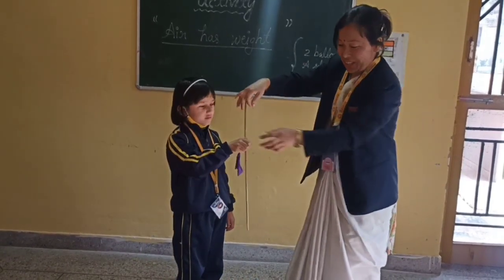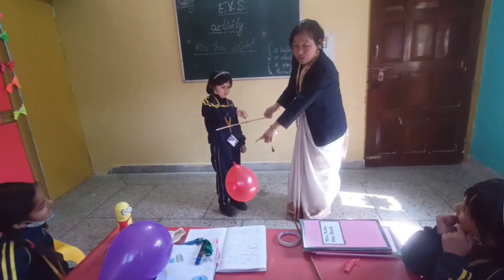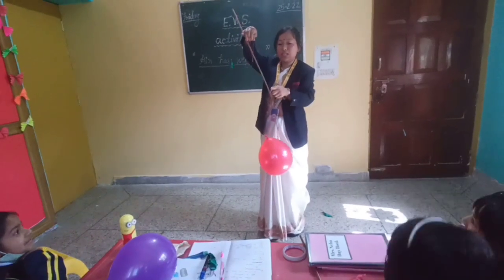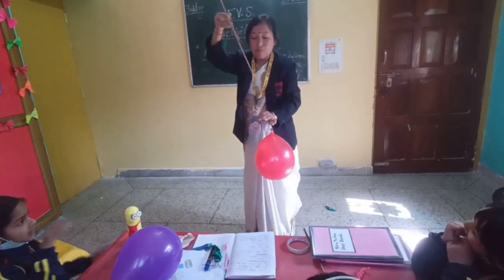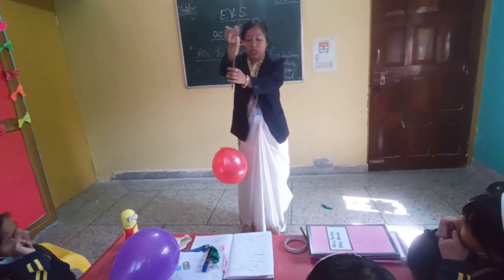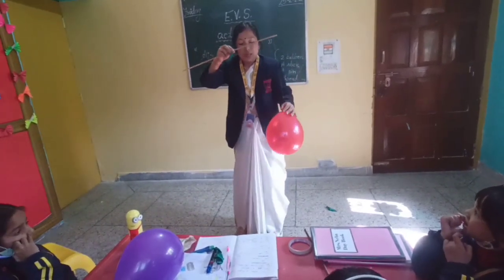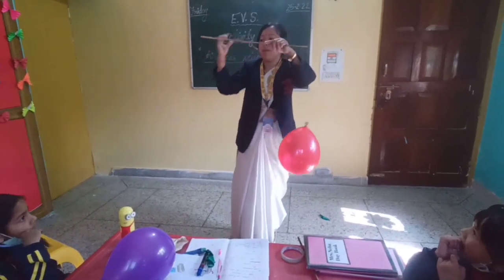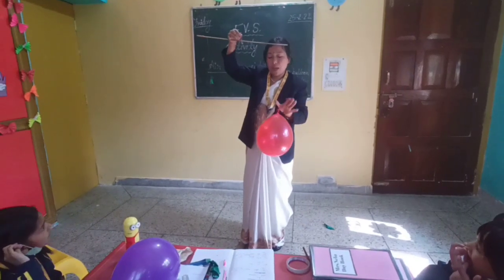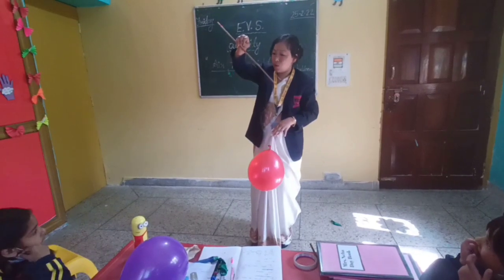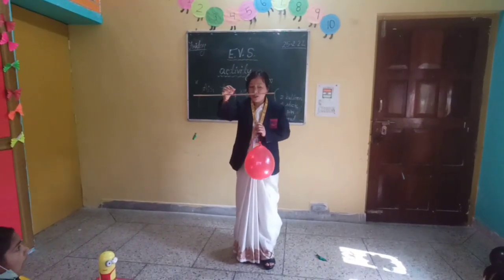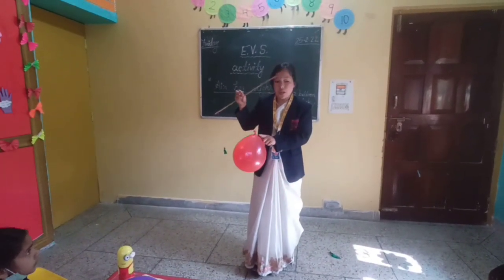Bang! What happened, children? Look here — this balloon has gone down. Kya hua balloon ka? Neeche aa gaya. Why? Because air has weight. Air mein kya hota hai? Weight hota hai. The balloon went down. The balloon which is still intact shows that air has weight — isse hamein pata chalta hai ki hawa mein bhi weight hota hai.